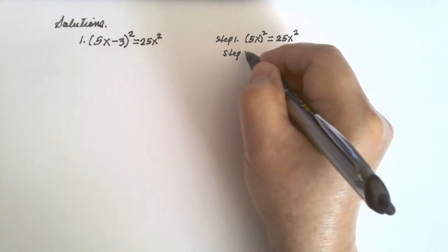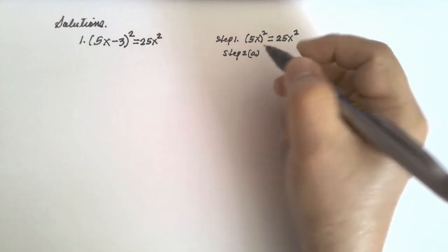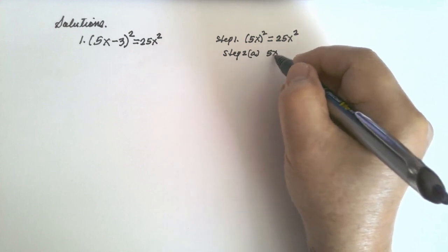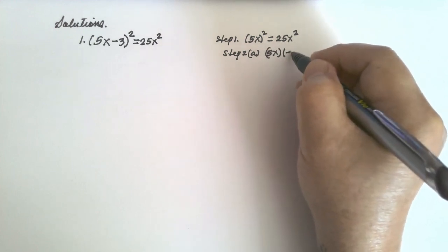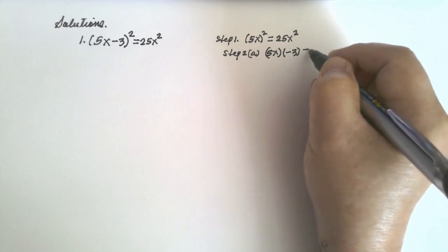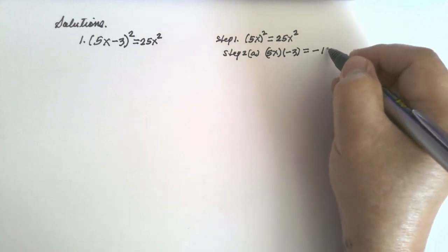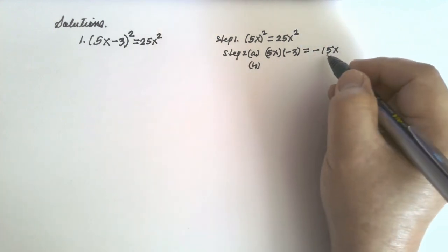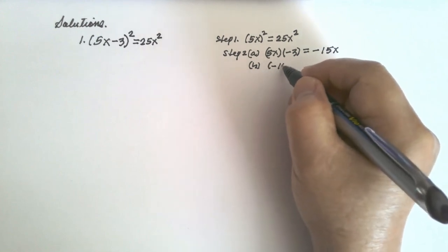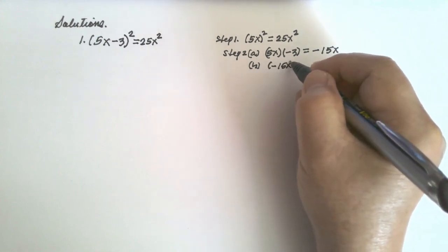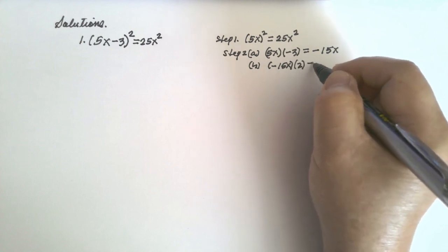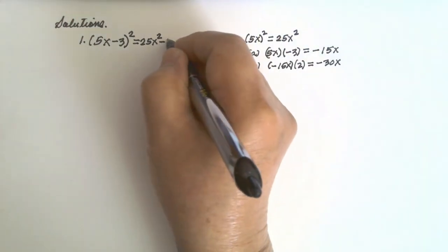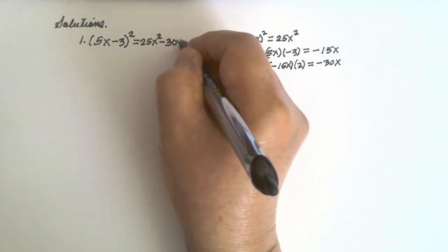Step number two, letter A: multiply the first term by the second term — 5x times negative 3 equals negative 15x. Letter B: multiply negative 15x by 2, giving us negative 30x.